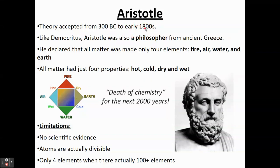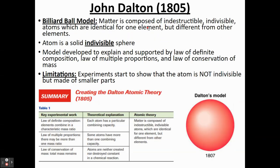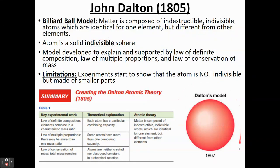We didn't hear much more about these thoughts until the 1800s, when we get to John Dalton. John Dalton came up with a model called the billiard ball model. Matter is composed of indestructible, indivisible atoms which are identical for one element but different from other elements. Dalton basically visualized atoms as small, hard spheres — some elements would be red spheres, some blue, some green, some with different sizes, depending on what element you're dealing with. The idea is that the atom is a solid, indivisible sphere.